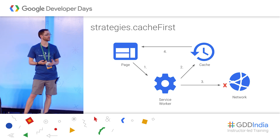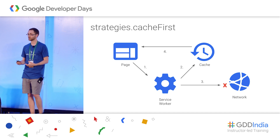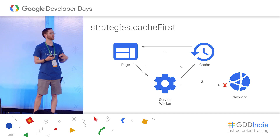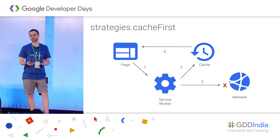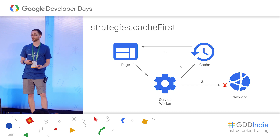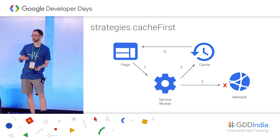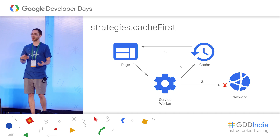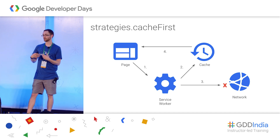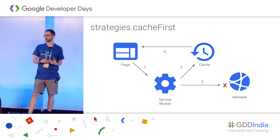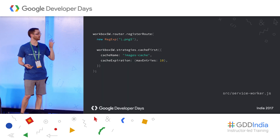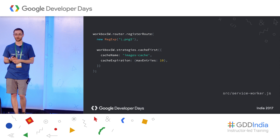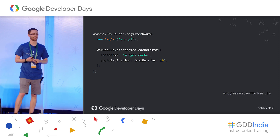Finally, there's cache-first. Just like network-first but reversed: the service worker looks in the cache first, and if there's nothing there, goes to the network. This might be useful for static resources that don't change much — like an about page or contact page. You might as well cache that and let the service worker deliver it to the user right away. We'll look at that in a little more detail for images, which is something you could use in a news app like the one in the lab.